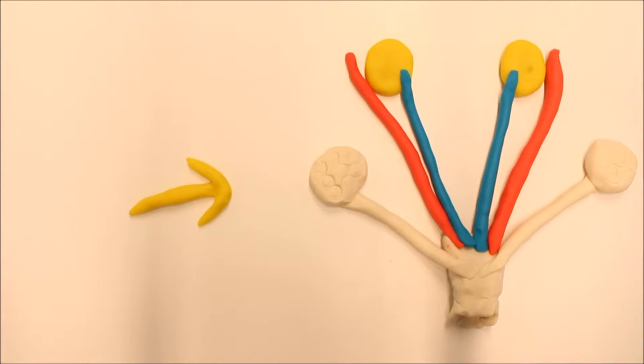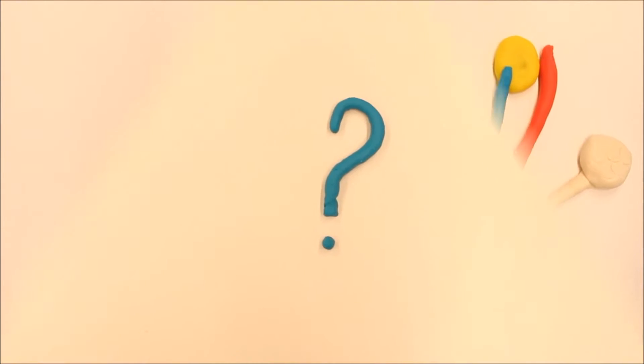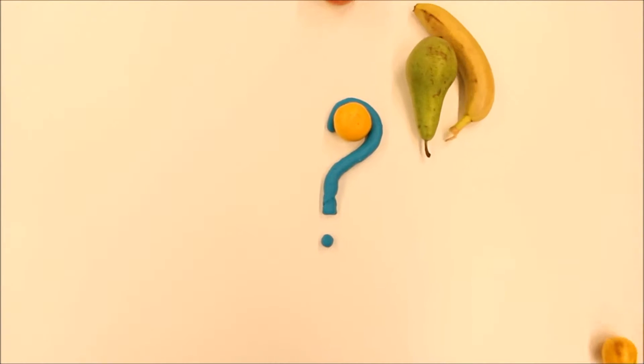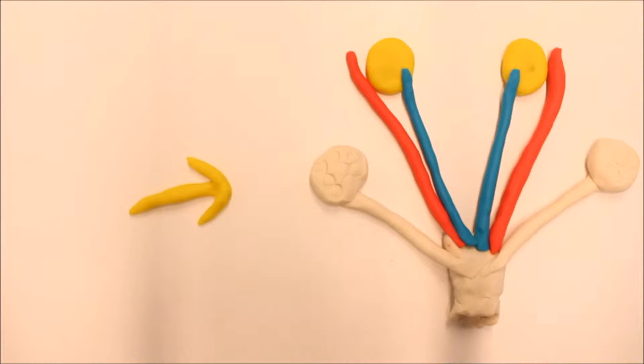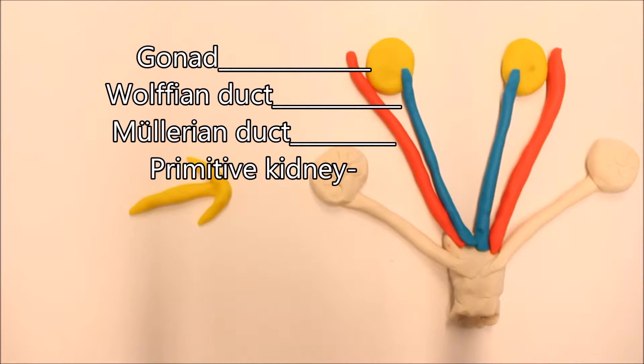The urogenital tract contains the gonads. But what are gonads? Are they some kind of fruit? No, the gonads are the primitive stage of either the testes or ovaries and form at the start of sex determination. They are the base of the urogenital tract.